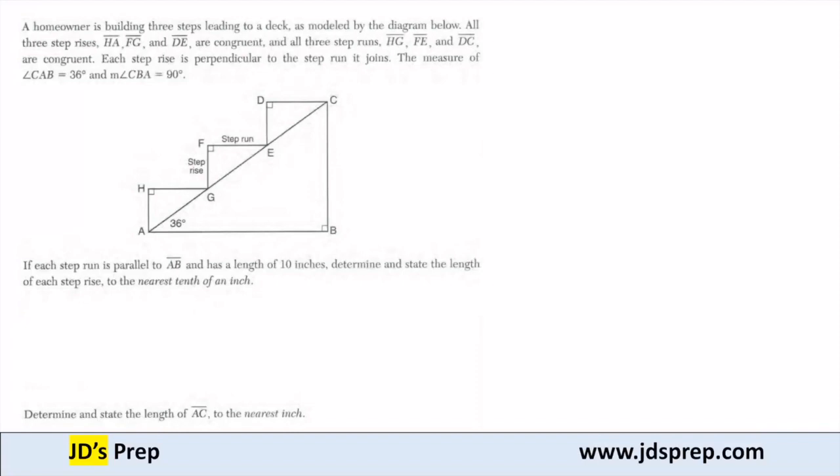And all three runs HG, FE, and DC are congruent. Each step rise is perpendicular to the run, so you can see all three right angles, and the measure of angle CAB is 36 degrees and CBA is 90 degrees.